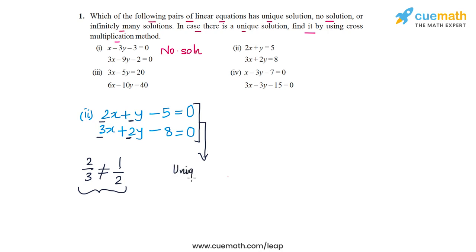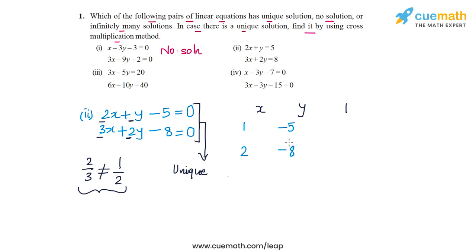Now to find that unique solution, we will use the cross multiplication method. We set up x, y, and 1, then write the coefficients of x, y, and the constant terms. First b1 and b2: that's 1 and 2. Then c1 and c2: that's minus 5 and minus 8. Then a1 and a2: that's 2 and 3. And then b1 and b2 again: that's 1 and 2.